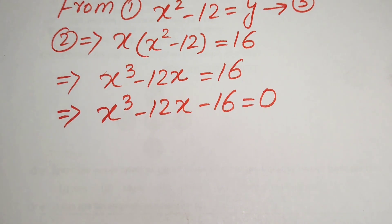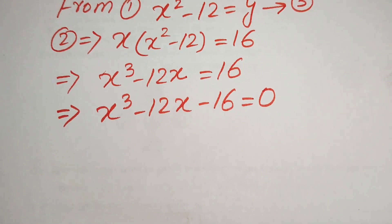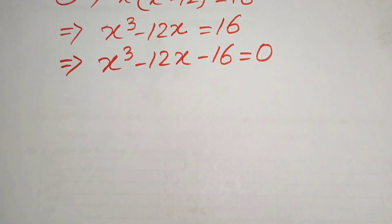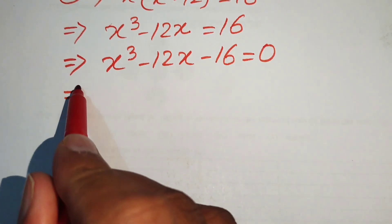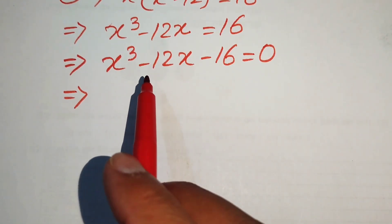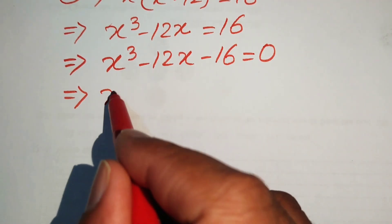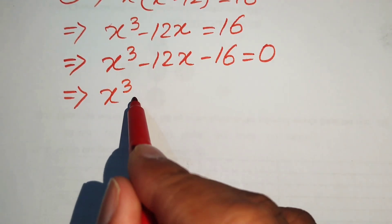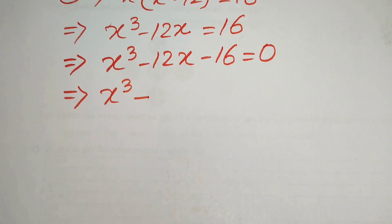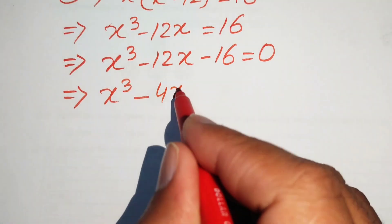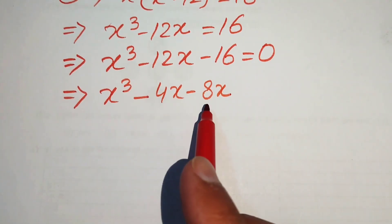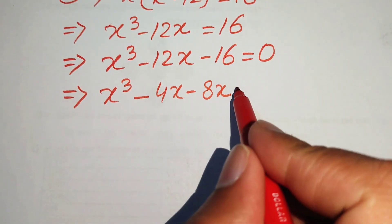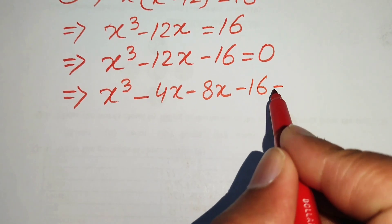We now factor this cubic equation by splitting the middle term. The middle term is minus 12x, which we write as minus 4x minus 8x, since minus 4 minus 8 equals minus 12. So the equation becomes x cubed minus 4x minus 8x minus 16 equals 0.